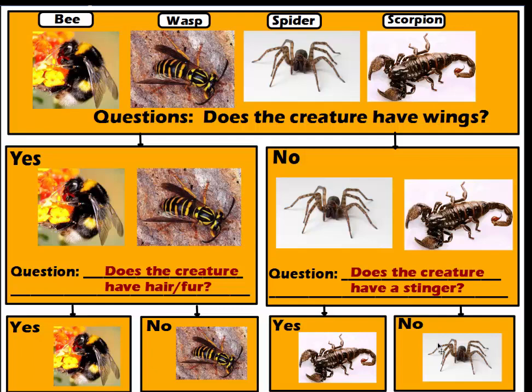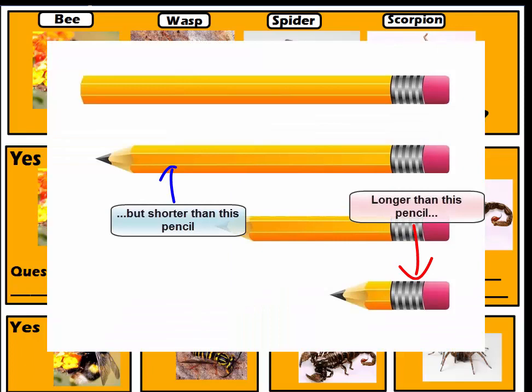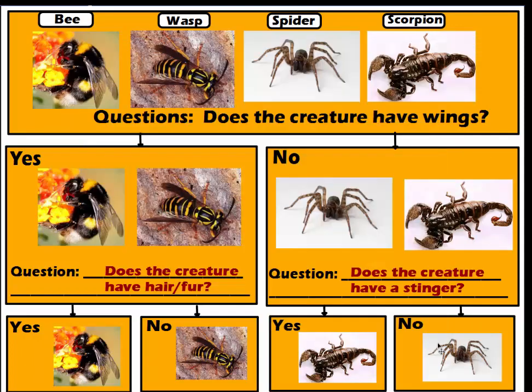When doing a sort, stay away from characteristics such as 'long' or 'bigger,' because those are relative — one object may be longer than another but shorter than a third. Length and size are always relative to what you're comparing. Always go with the most obvious observable things: wings, antennae, legs, number of legs, claws, stingers, tails — things like that. If you use those, you'll never get these wrong.